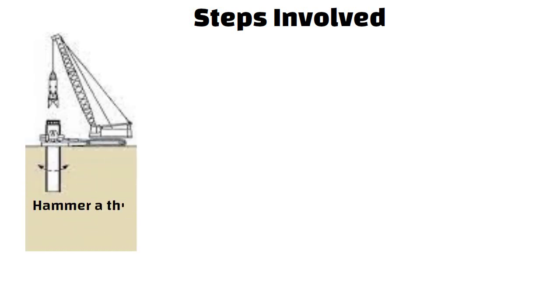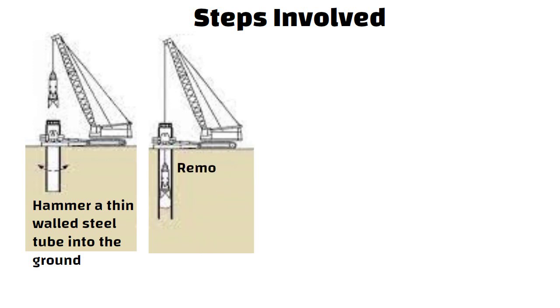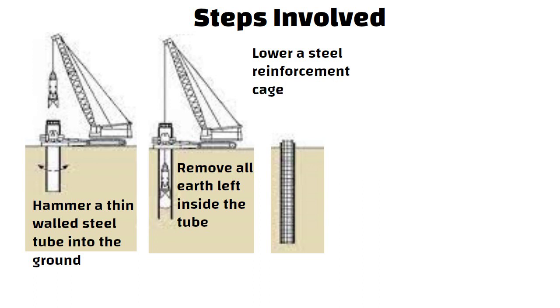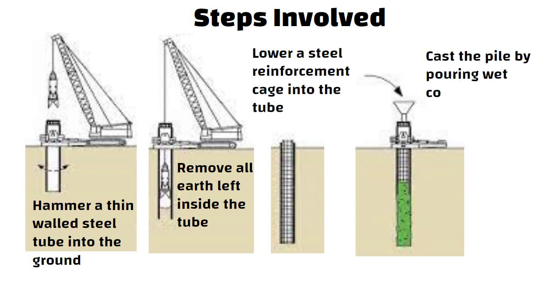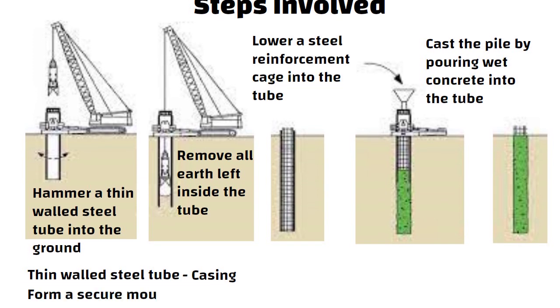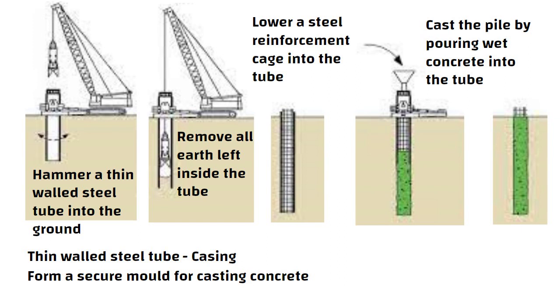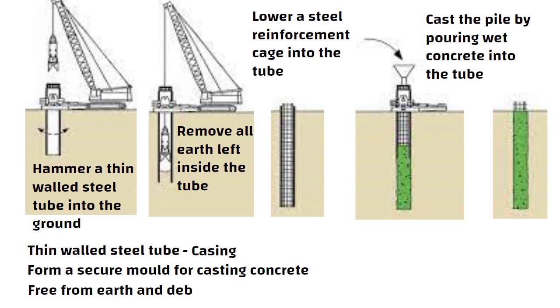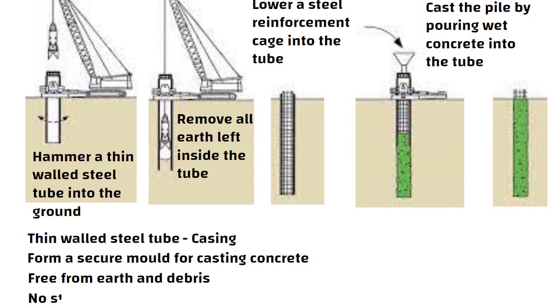It starts with hammering a thin-walled steel tube into the ground. Remove all earth left inside the tube. Lower a steel reinforcement cage into the tube. Cast the pile by pouring wet concrete into the tube. The thin-walled steel tube is called casing. It only serves to form a secure mold for casting concrete that is free from earth and debris. It has no structural role to play after the casting is complete.